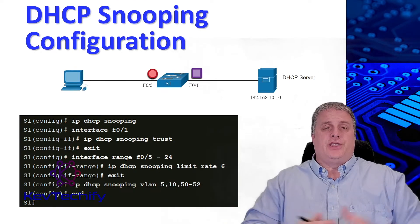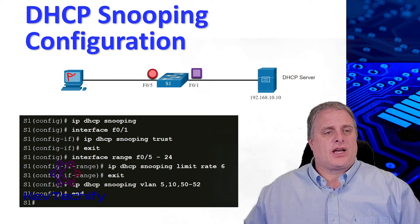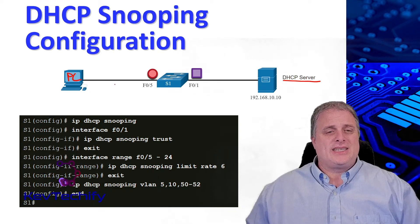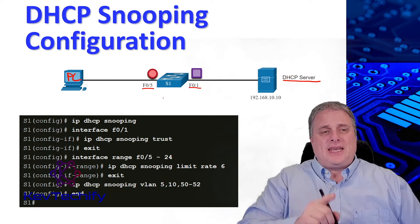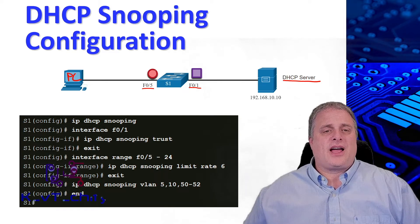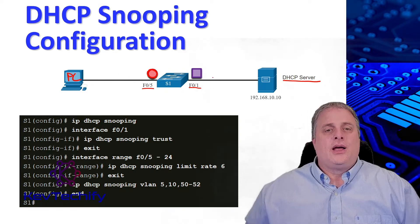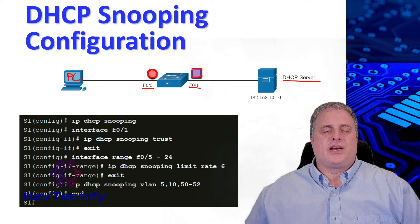Here's an example of how to configure DHCP snooping. We have a simple network setup: a PC on the left side connected into a switch, and on the right side we have our DHCP server. The PC is connected to the switch on FastEthernet 0/5, and the DHCP server is connected on FastEthernet 0/1. Because the PC is connected on Fa0/5, that is an untrusted port — there should never be a DHCP server on this port.